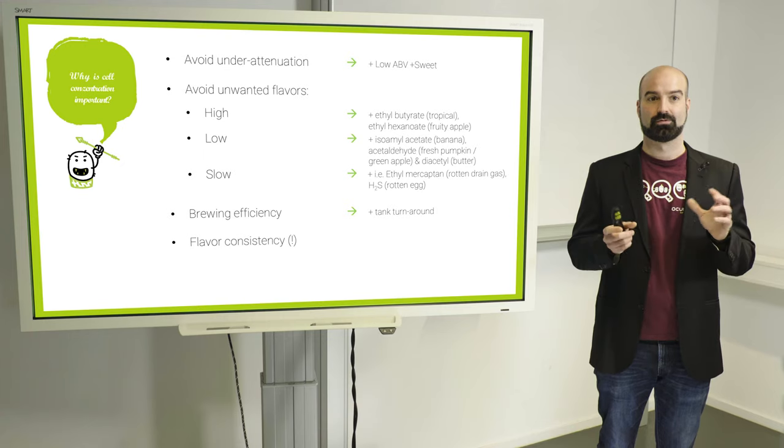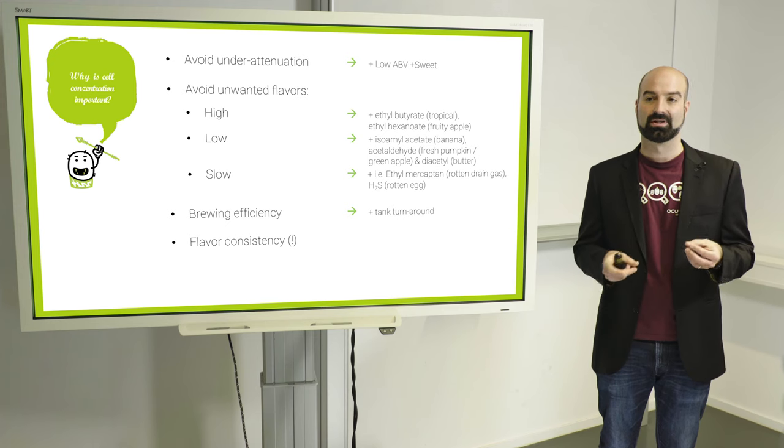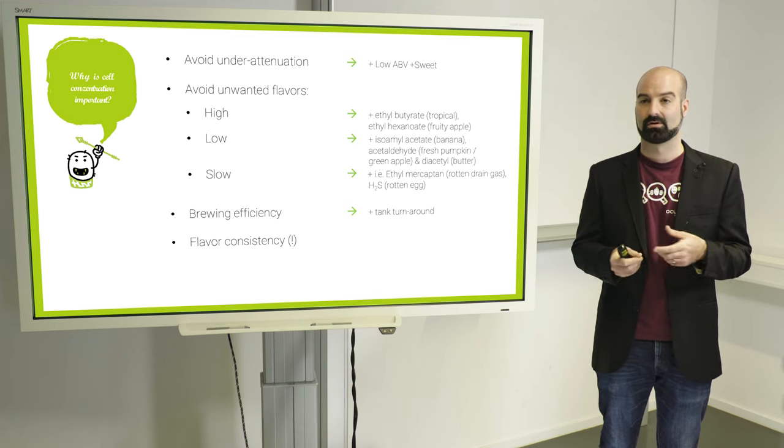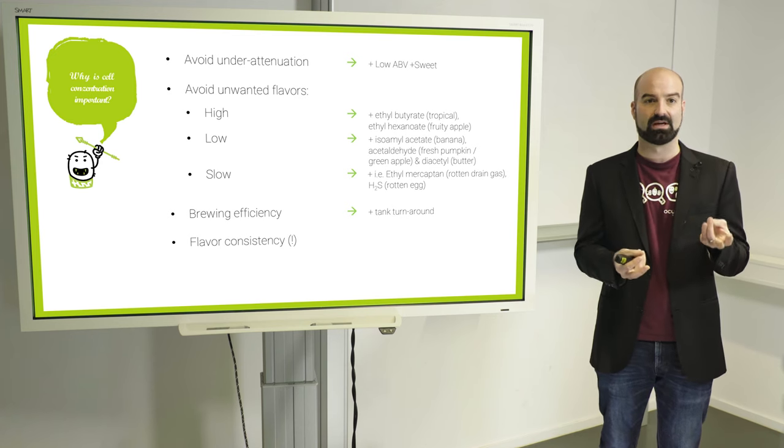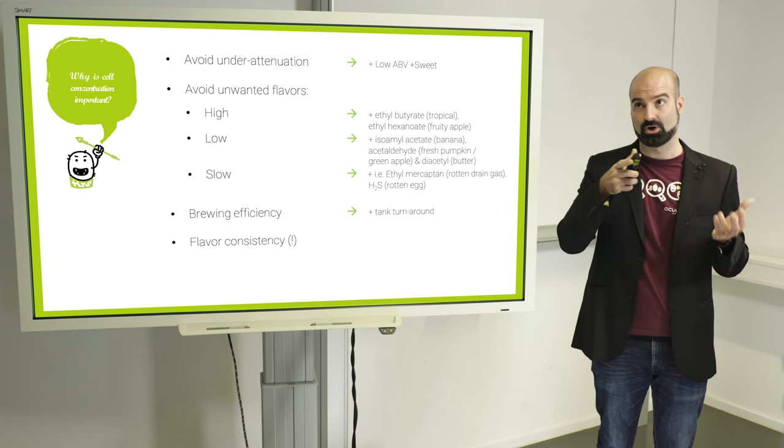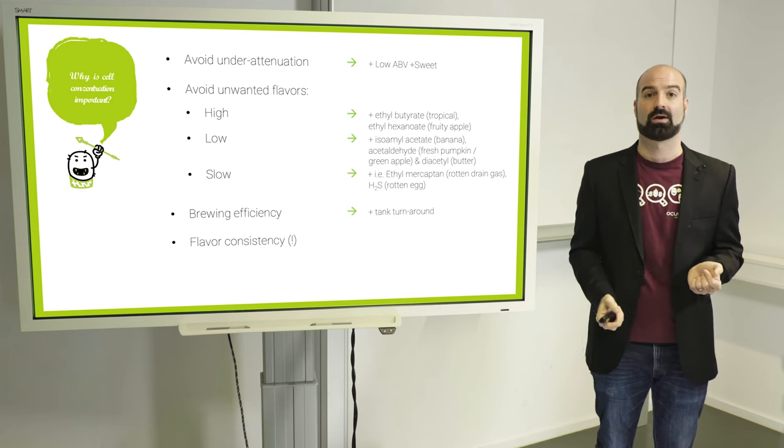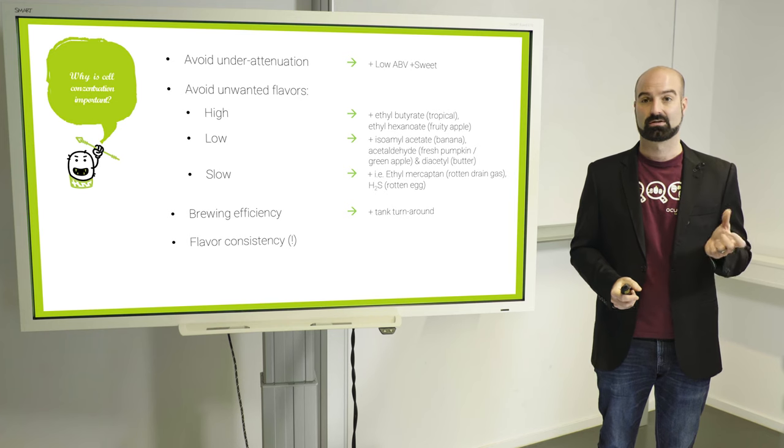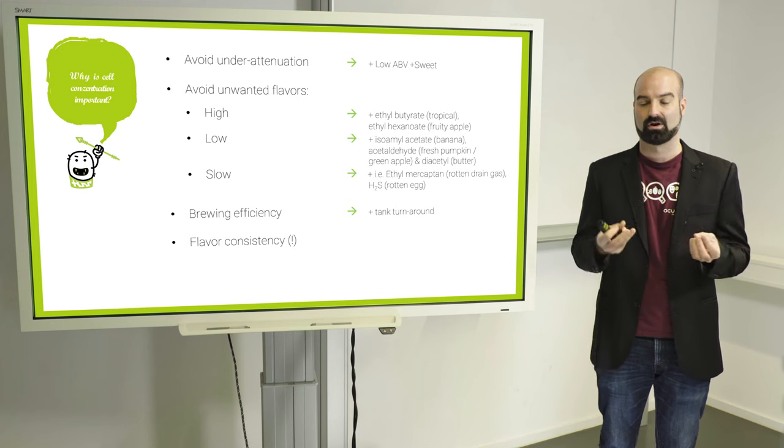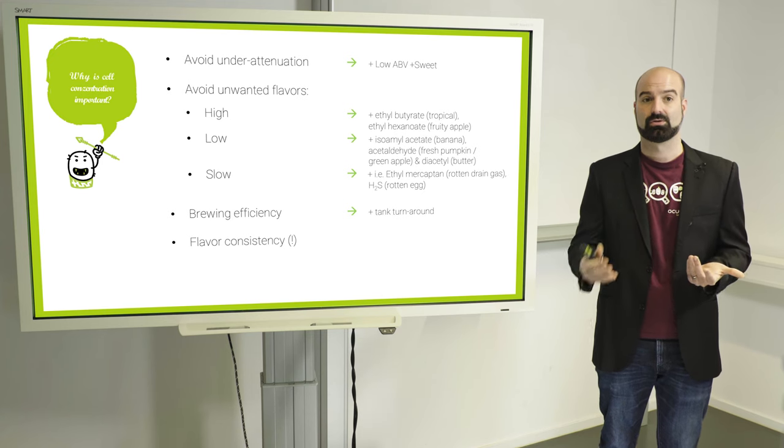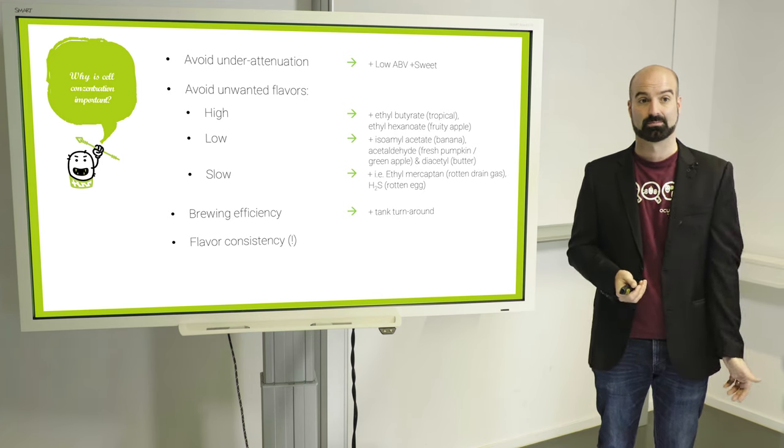In more scientific terms, what does wrong yeast concentration mean? If you have under attenuation you can have low alcohol by volume and sweet beer, you can also have plenty of other wanted or unwanted flavors like a tropical or fruity taste, pumpkin taste, a buttery taste even, which are not in themselves necessarily bad, but they should be there because you want them to and not because you don't have your yeast concentration under control. A slow fermentation can also lead to tastes you definitely don't want, which is like rotten eggs or like a drain. The efficiency is also affected obviously, so a quick fermentation means you have quicker turnaround and higher profitability as a brewery.